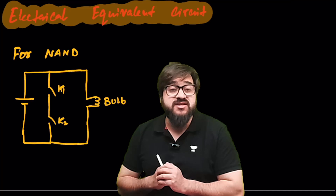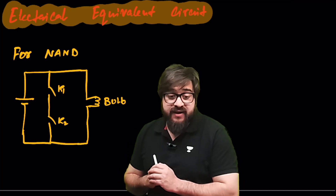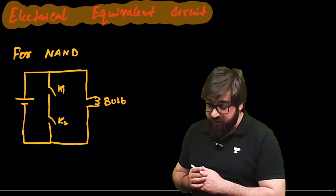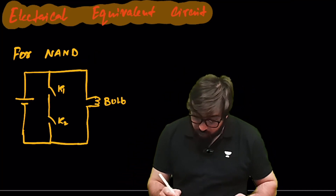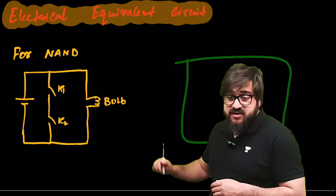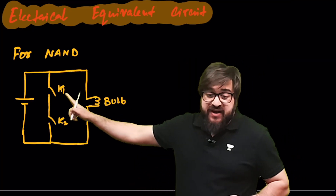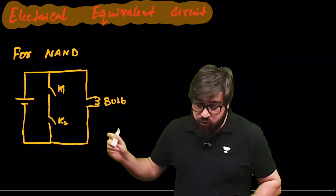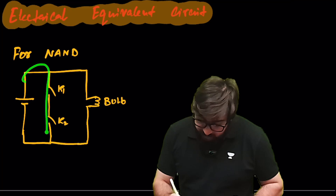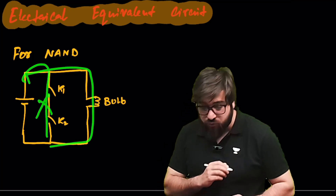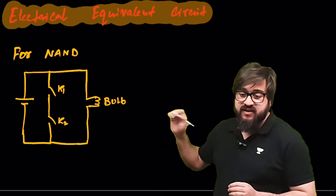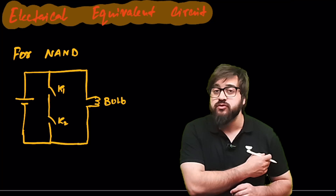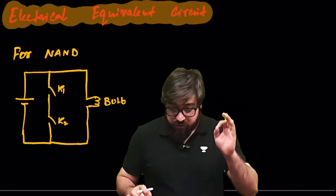The electrical equivalent circuit of the NAND gate: if key 1 is on and key 2 is off, current cannot complete the path through both series keys, so current flows through the bulb — bulb remains on. You can verify the full truth table using this circuit.